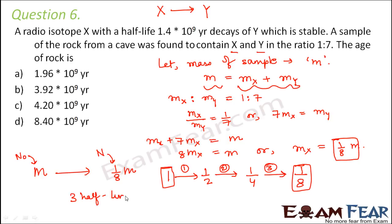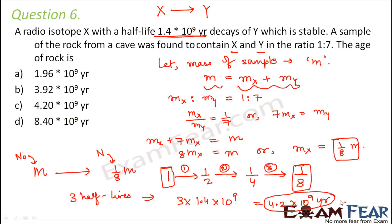The time for conversion of M to M/8 is 3 half-lives. The half-life is 1.4 into 10 to the power 9 years, so 3 half-lives equals 3 into 1.4 into 10⁹ years, that is 4.2 into 10⁹ years. This is the age of the rock — today the rock has 1/8 of M, so from initial M it took 4.2 into 10⁹ years for this disintegration, which is the age of the rock.